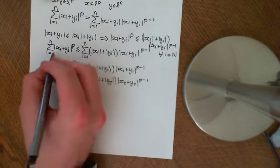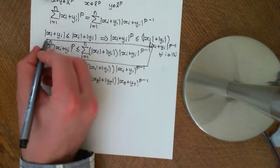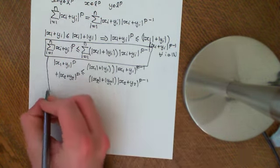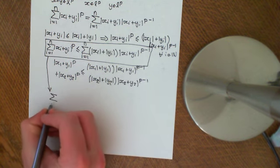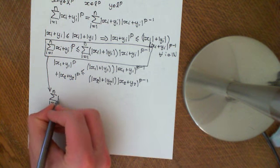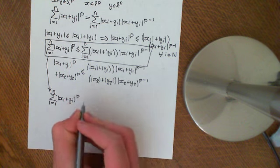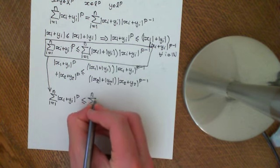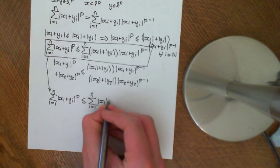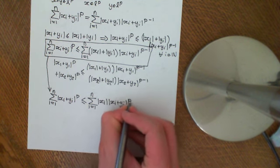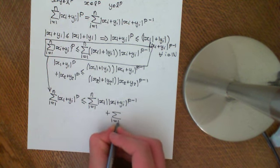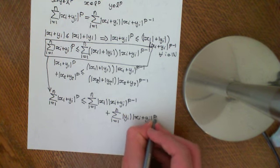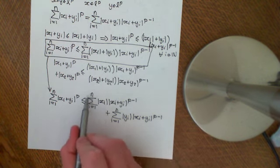So we have this inequality. Now we need to go back to Hölder's inequality. First, we can develop this one more step: the sum from i equals 1 to n of |xi + yi|^p is less than or equal to the sum from i equals 1 to n of |xi| times |xi + yi|^(p-1), plus the summation from i equals 1 to n of |yi| times |xi + yi|^(p-1). What we now want to do is apply Hölder's inequality to these summations.